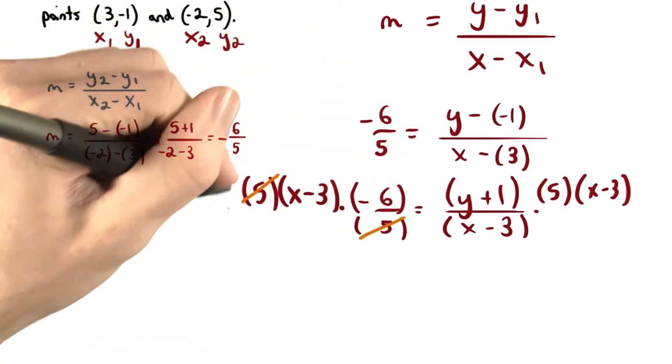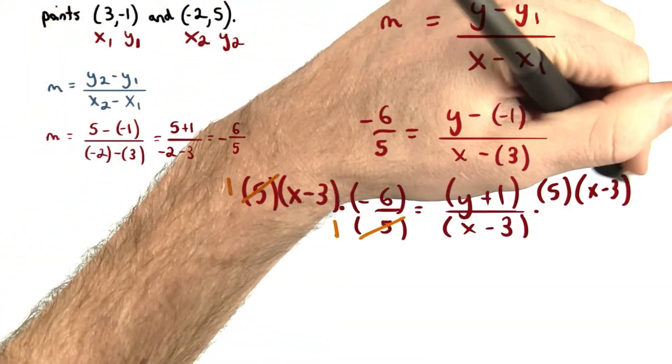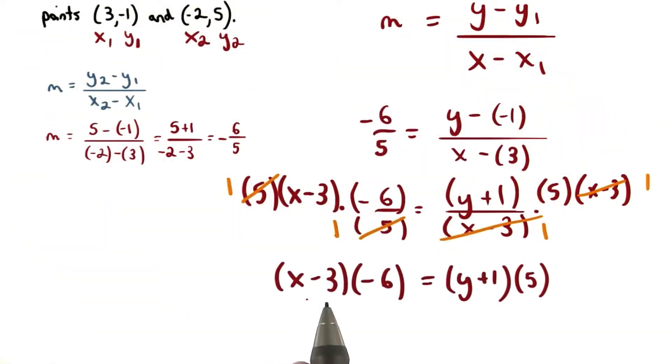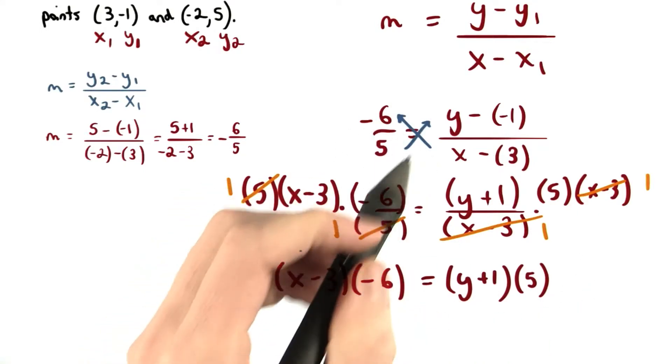We know 5 divided by 5 makes 1, and x minus 3 divided by x minus 3 also makes 1. So we have x minus 3 times negative 6 equals y plus 1 times 5. We could have gotten to this step just by cross-multiplying.